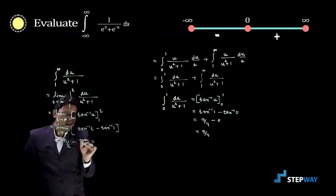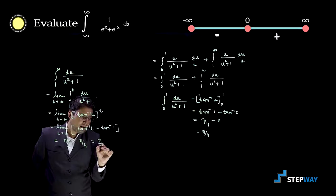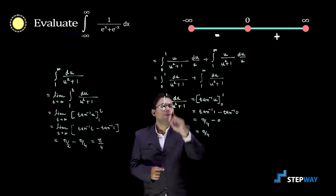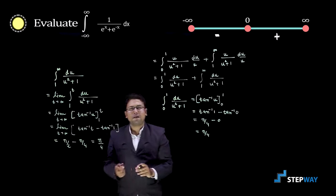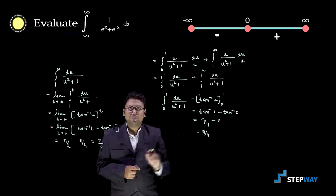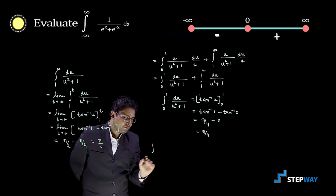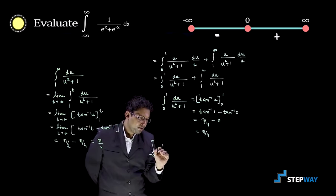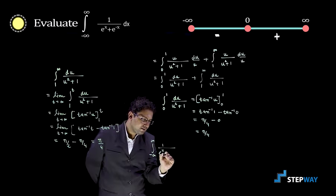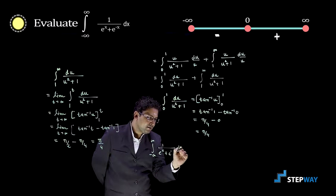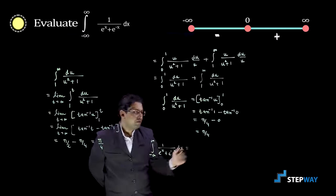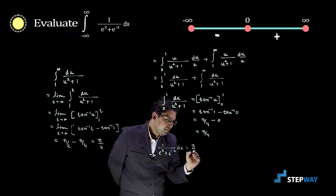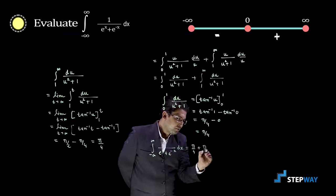The first term is pi by 4 and the second term is pi by 4. Adding these two, we get the integration from minus infinite to infinite of 1 upon e raised to x plus e raised to minus x, dx, equal to pi by 4 plus pi by 4, which is pi by 2.